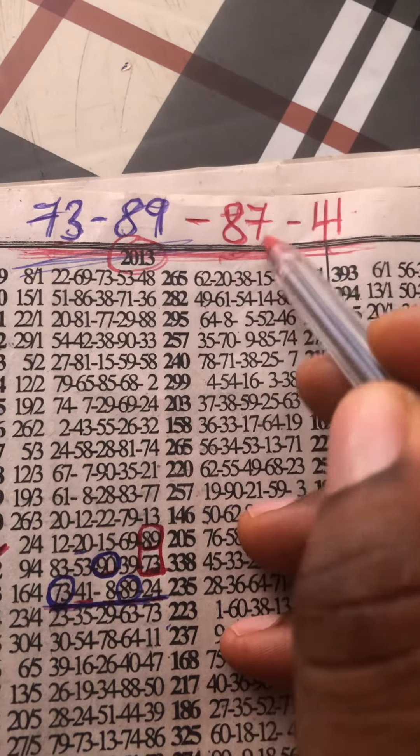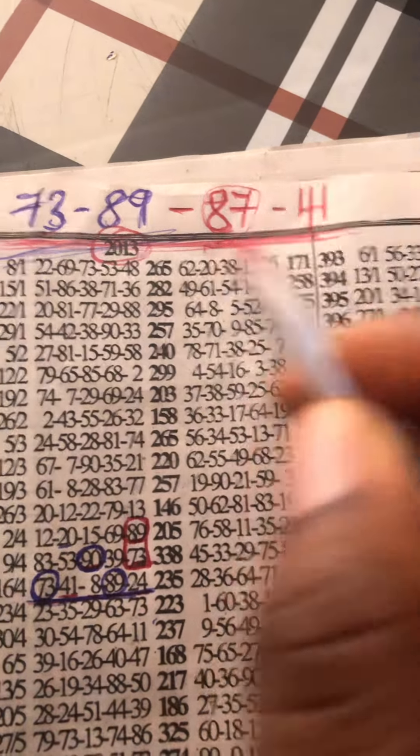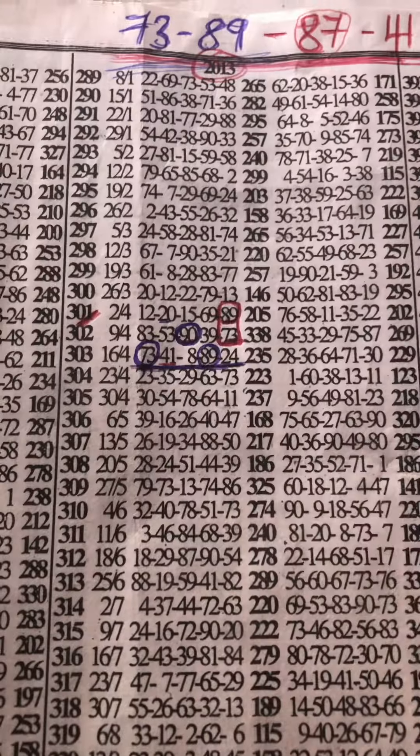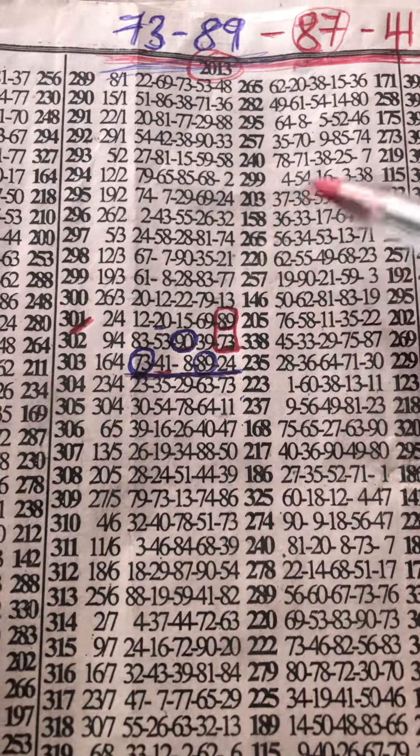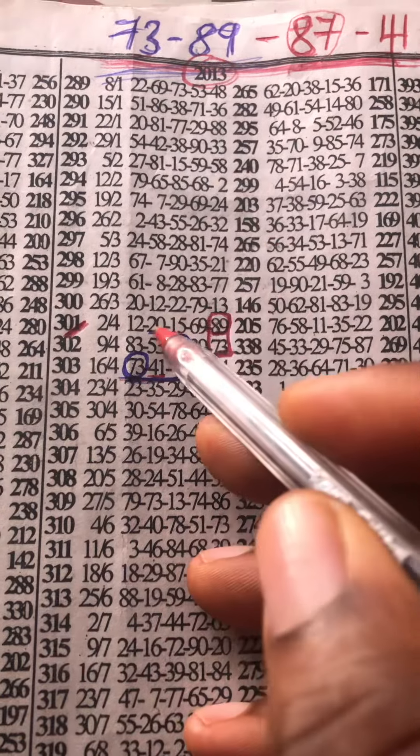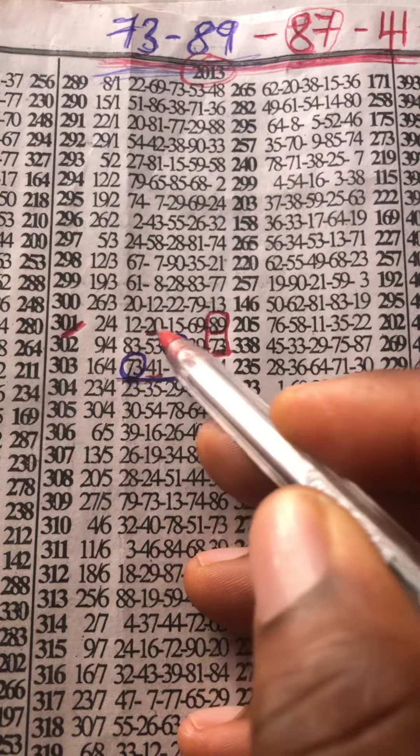89, 87, 41. 73, 89, 87, 41. So this is the banker for today and this is the two show. The red one is the two show and this is the event for today. If you check on this event...